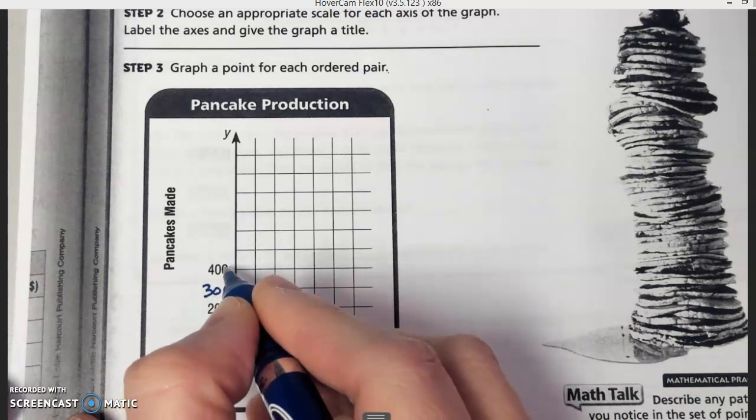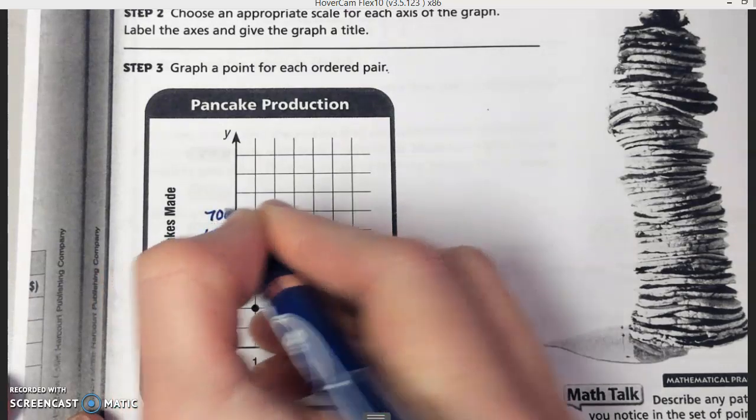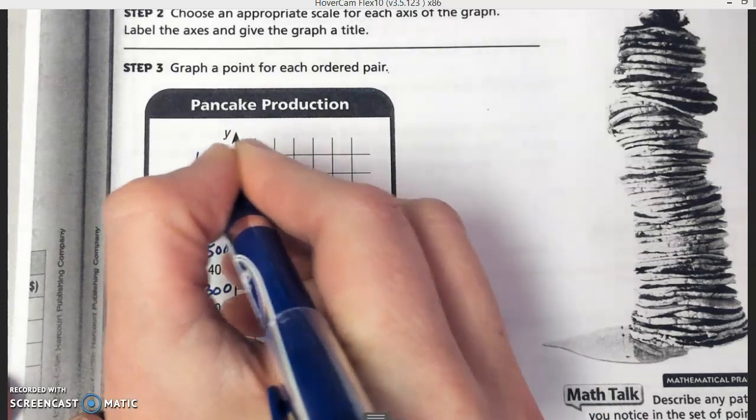So, 100, 200, 300, 400, 500, all the way up to 1,000.